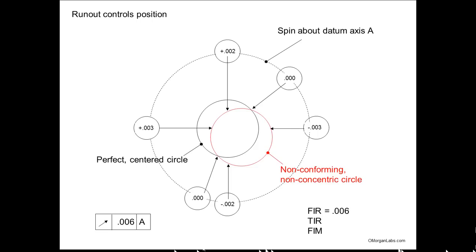Runout controls orientation. Here you can see your dial indicator moving, revolving in a perfect circle, and the needle going in and out. The red is a hypothetical perfect circle but it's off-center. So your dial indicator would pick that up as you spin about axis A — the callout is six mil runout with respect to A. You look at the readings: your largest negative reading is minus 3, your largest positive reading is plus 3. Add those together and it's 6. Some people call it FIR — full indicated reading — 6 mils, or TIR — total indicated reading — or full indicated measurement. Those are the terms you may see.